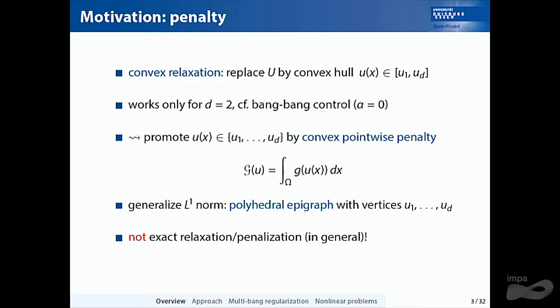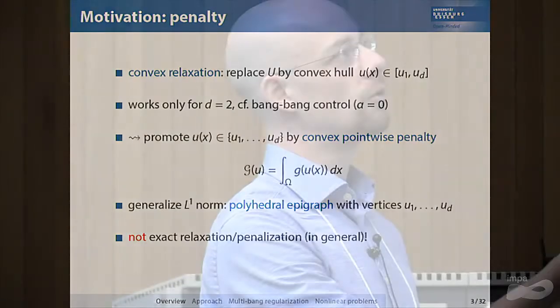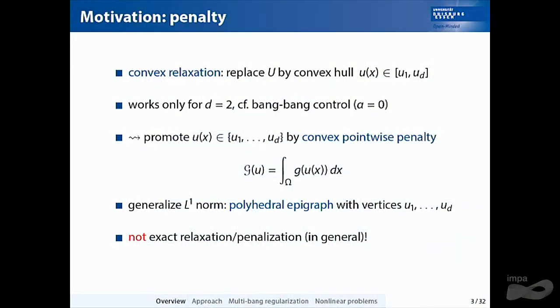The idea is a piecewise linear or piecewise affine function with kinks where the desired values are. You have a quadratic tracking term and a piecewise affine regularization term, and you try to make both small. Moving away from one of the discrete given values gives you a quadratically small decrease in the discrepancy term, while the regularization term increases linearly. So it is more expensive to leave these given values than the gain in fitting the data, meaning the solution prefers to lie at these discrete values.